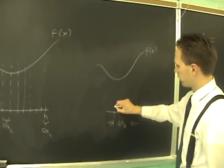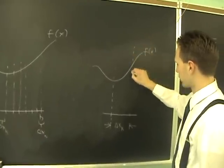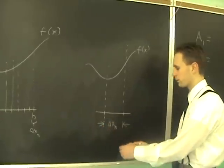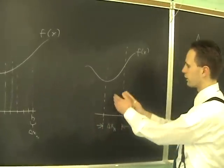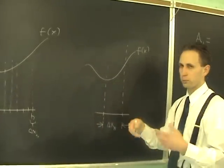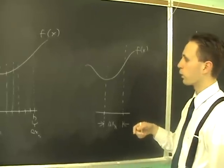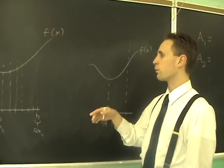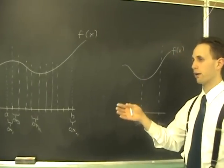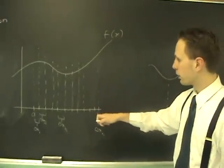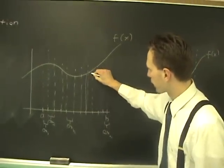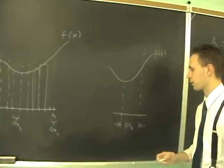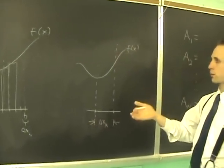In partitioning the x-axis, it partitions our region; we have these slivers here. If our mesh size is fine enough, if our delta x's are small, then these regions are approximately rectangular. What we're going to do is approximate the area underneath our curve by using rectangular strips whose areas approximate the area underneath the curve.